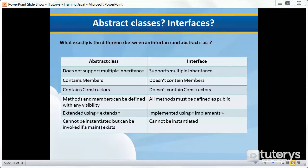Methods and members can be defined with any visibility inside an abstract class, whereas all methods must be defined as public inside an interface. An abstract class is extended using the keyword 'extends', whereas an interface is implemented using the keyword 'implements'. Finally, an abstract class cannot be instantiated but can be invoked if a main method exists, whereas an interface also cannot be instantiated and cannot be invoked even if a main method exists.